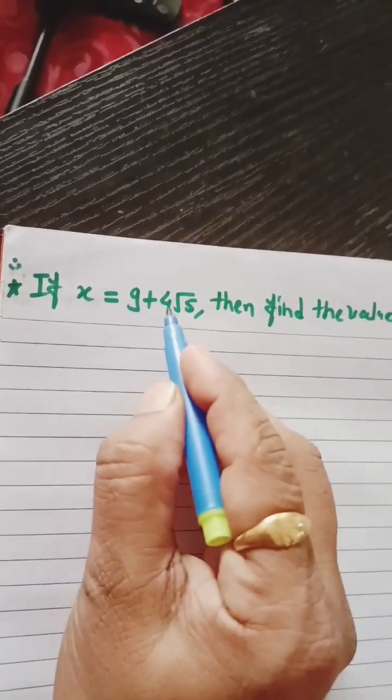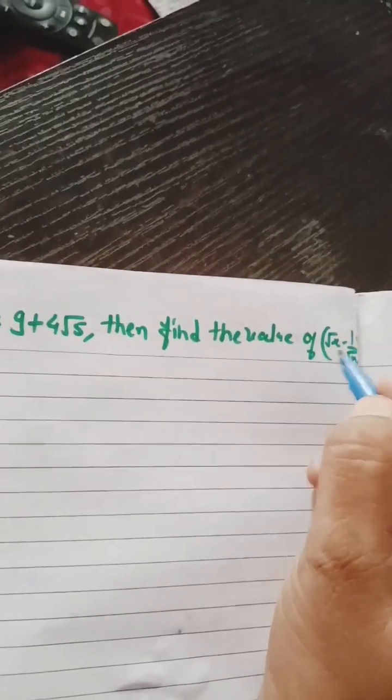Here we have given x equals to 9 plus 4 root 5 and we have to find root x minus 1 by root x.